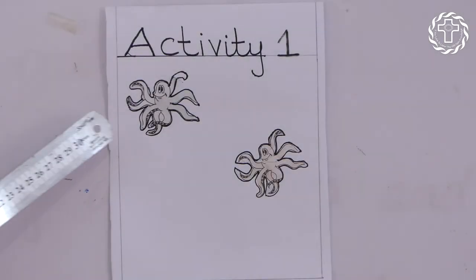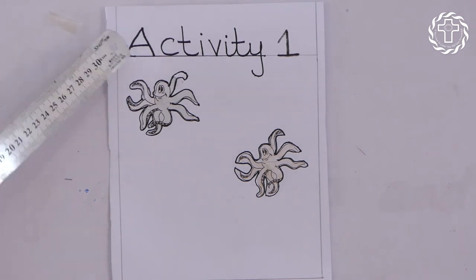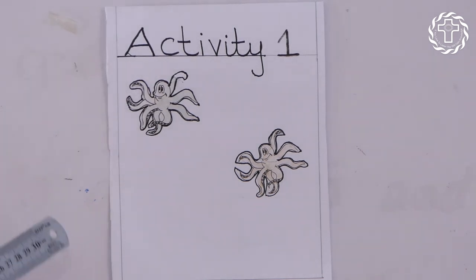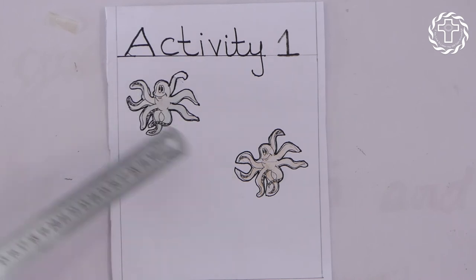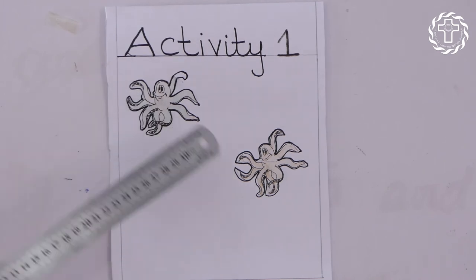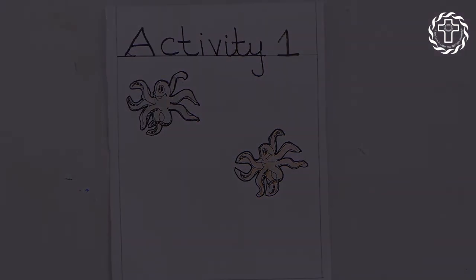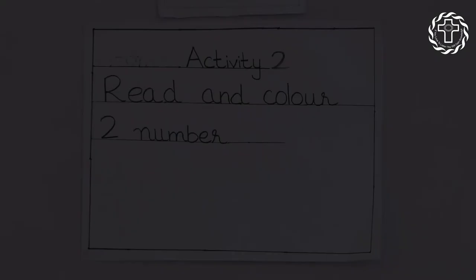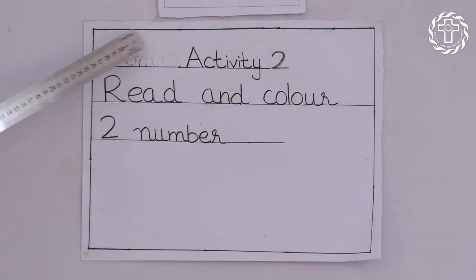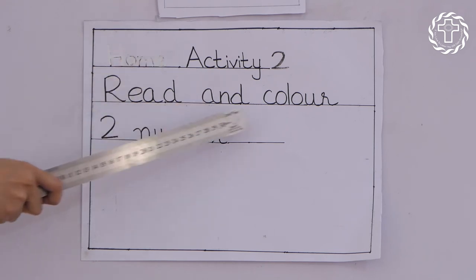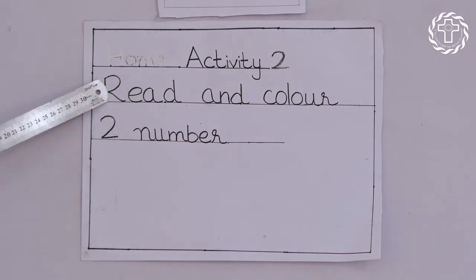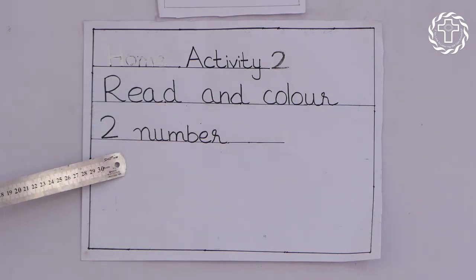This is your first activity. You have to color the picture of the octopus. How many octopus are here? One, two. How many octopus are here? One, two. This is your second activity. Read and color two numbers on page number 17 in your books. You have to read and color two numbers.